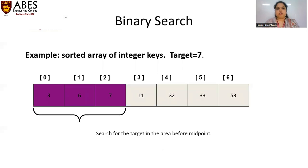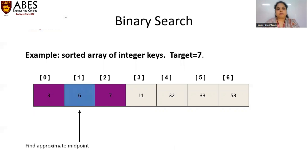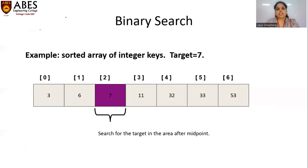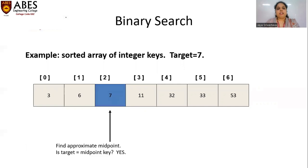In the subarray before the midpoint, the lowest index is 0 and the highest index is 2. We calculate the approximate midpoint as index 1, which holds value 6. The target is not equal to the midpoint. The target 7 is not less than 6, so we check if target is greater than the key of the midpoint — yes, target 7 is greater than 6. So we search in the area after this midpoint. The next approximate midpoint holds value 7, which equals the target. The target has been found.